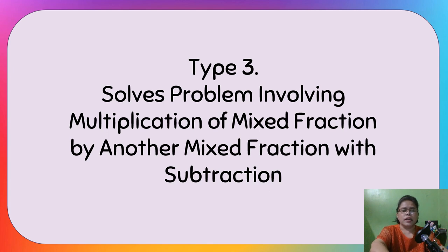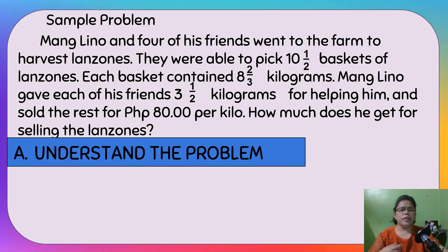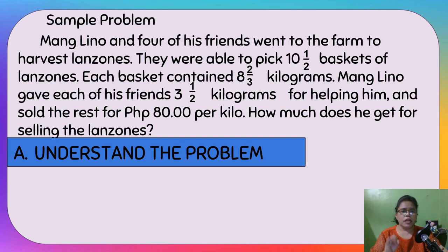Last one: solving a problem involving multiplication of mixed fractions with subtraction. Sample problem: Marino and 4 of his friends went to the farm to harvest lanzones. They were able to pick 10 1/2 baskets of lanzones. Each basket contained 8 2/3 kilograms. Mang Lino gave each of his friends 3 1/2 kilograms for helping him.